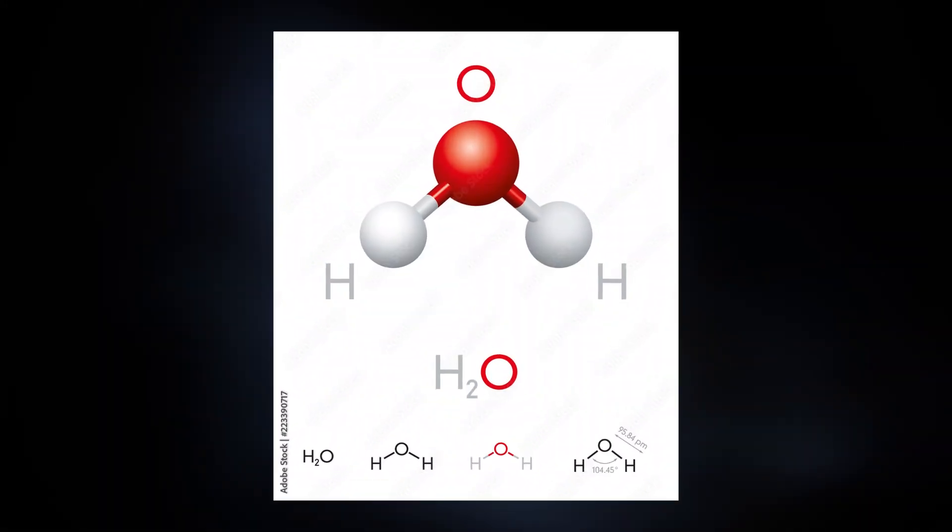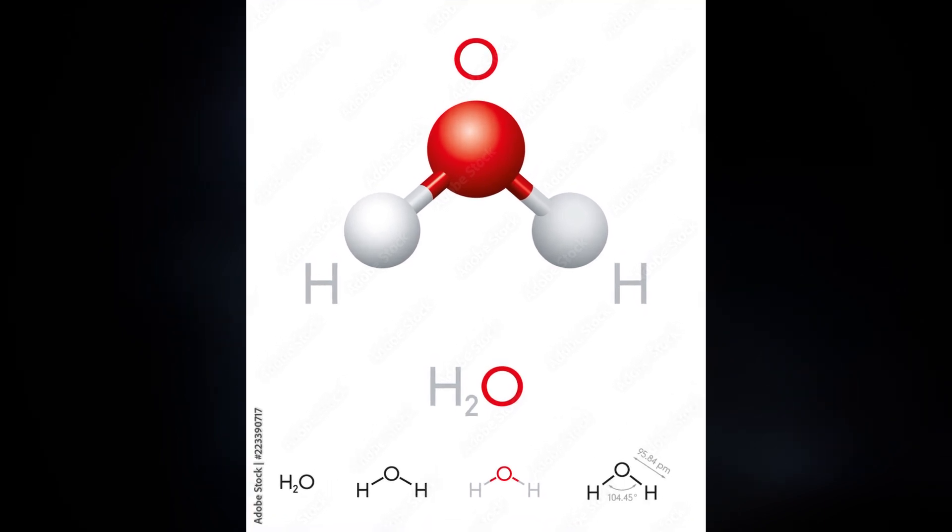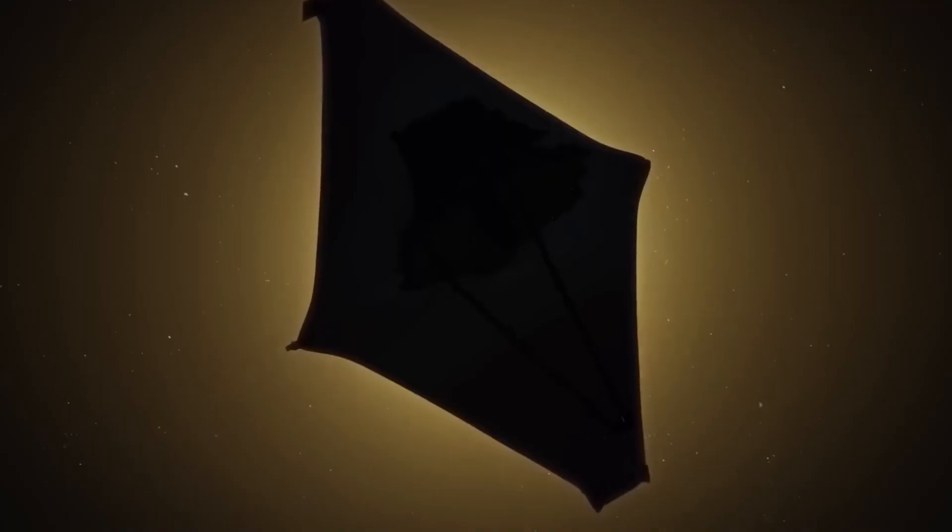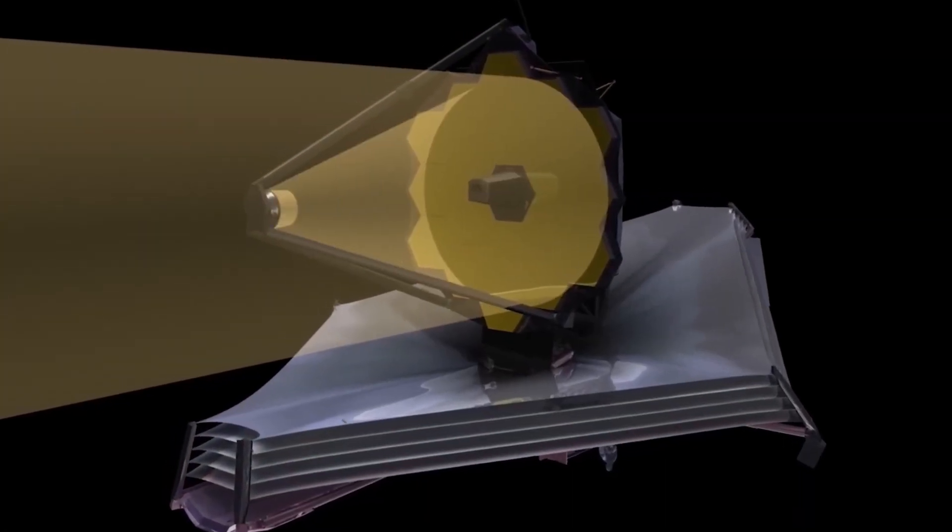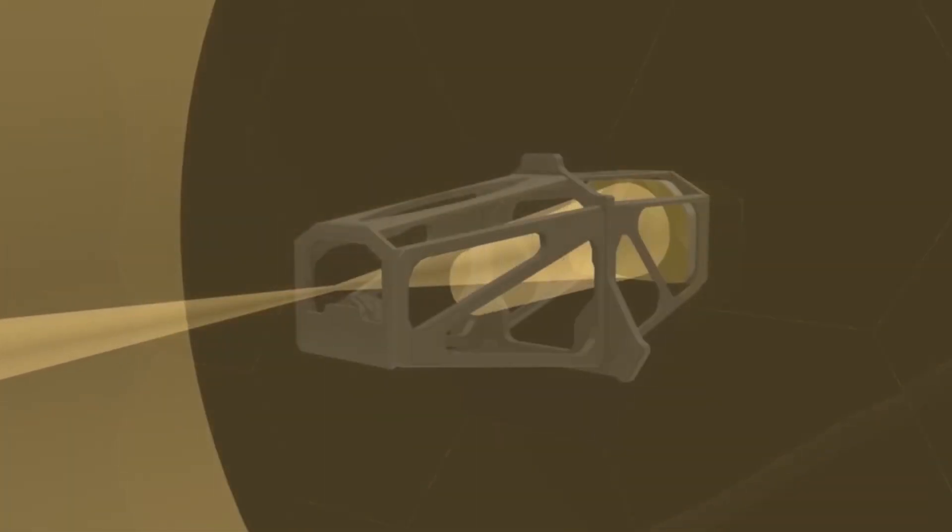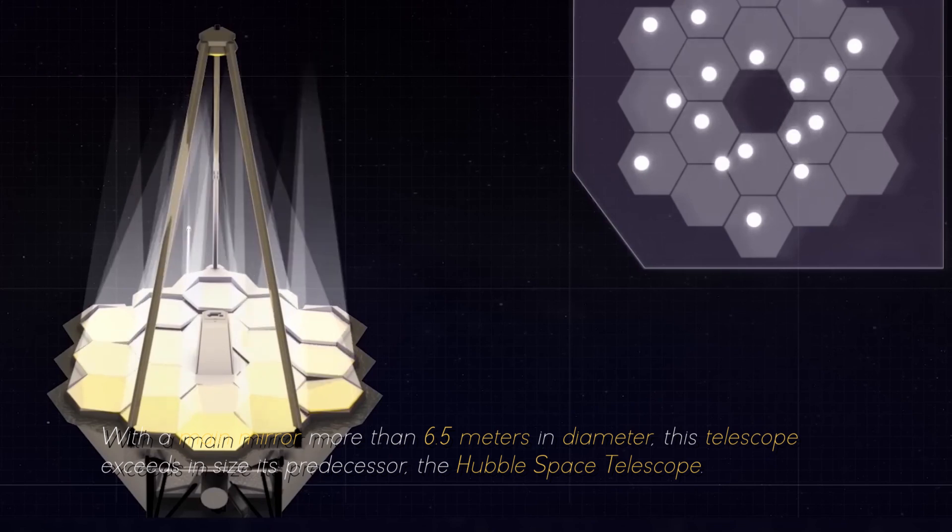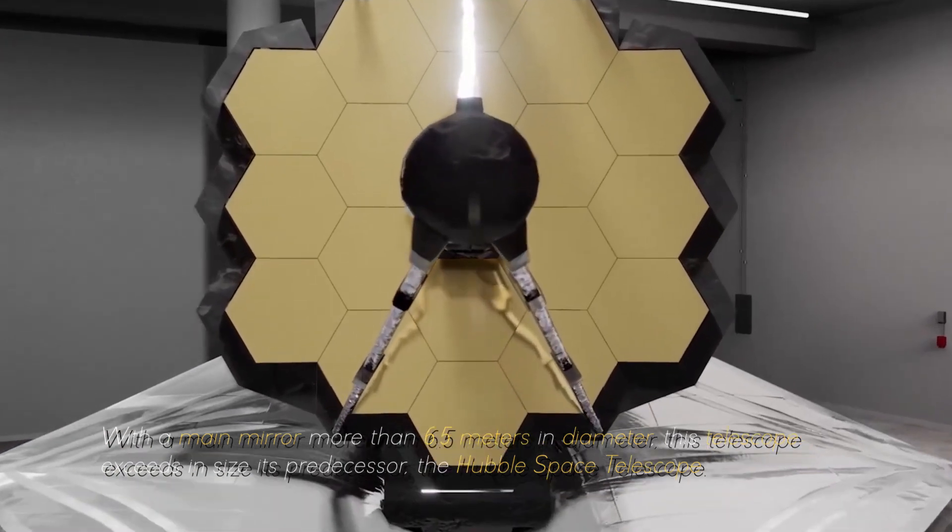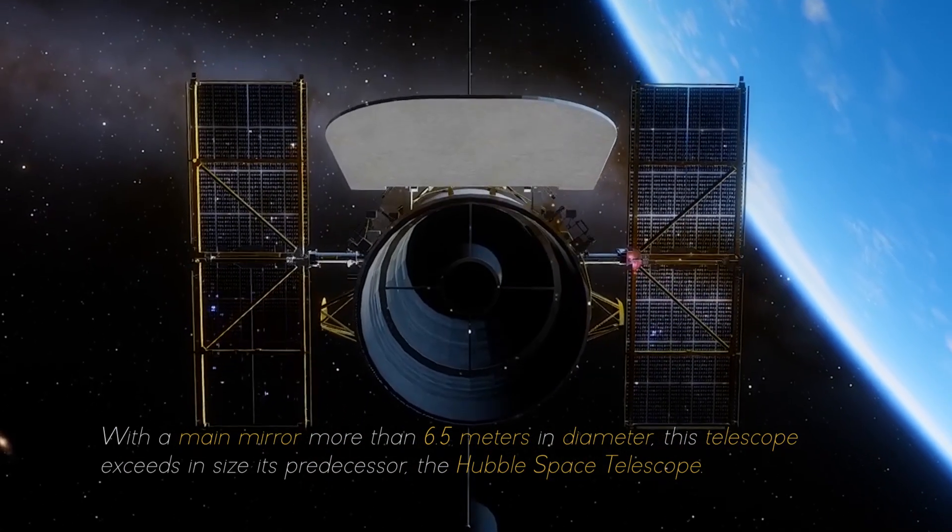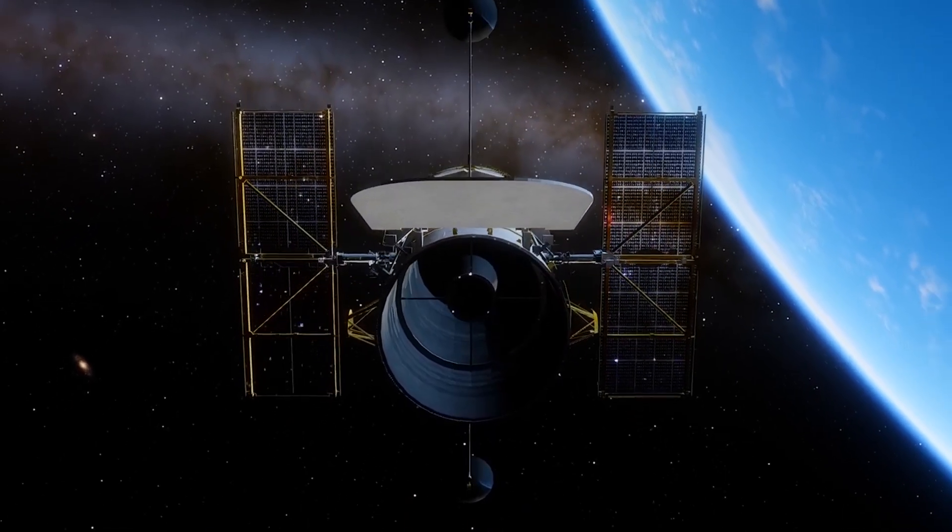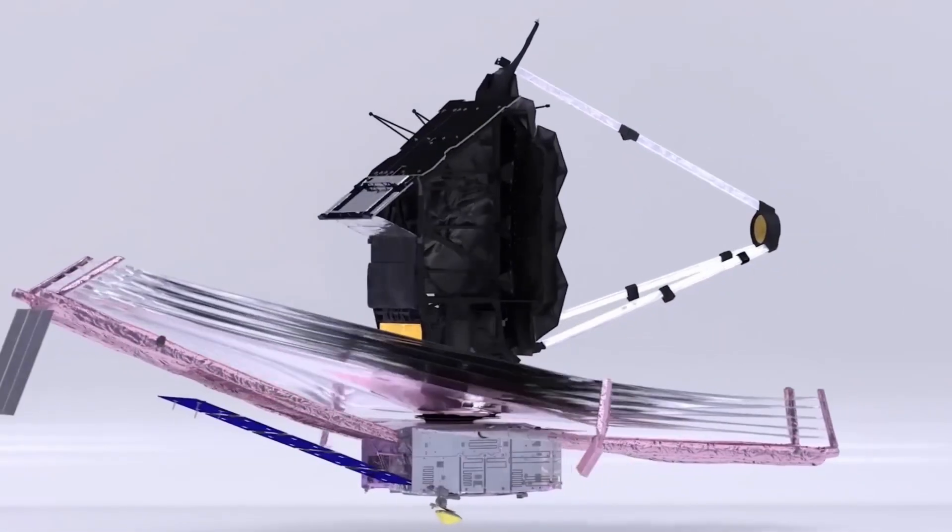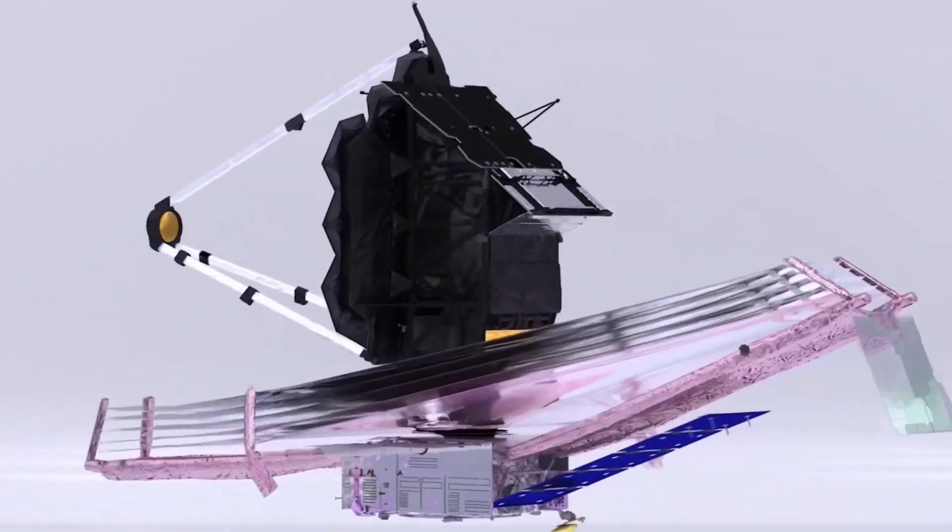What we are seeing here is the chemical signature of water vapor. The James Webb Space Telescope is equipped with an array of advanced scientific instruments carefully designed to observe the universe at an unprecedented range of wavelengths. With a main mirror more than 6.5 meters in diameter, this telescope exceeds in size its predecessor, the Hubble Space Telescope.